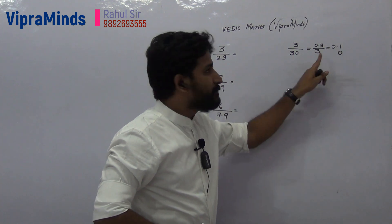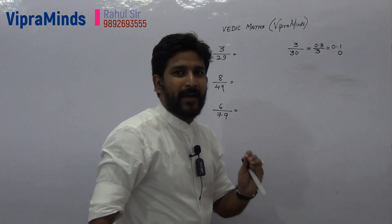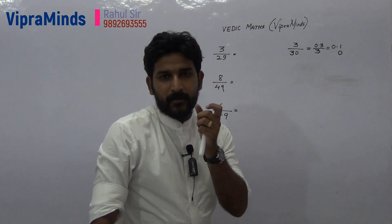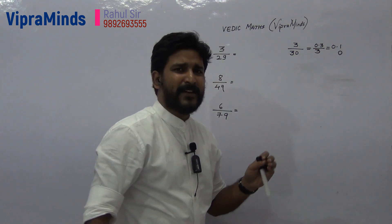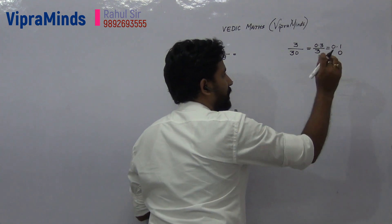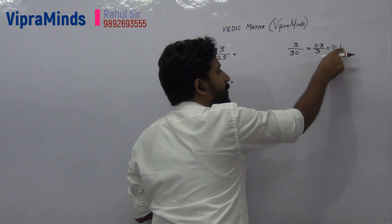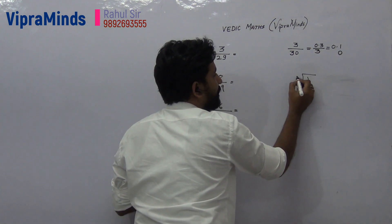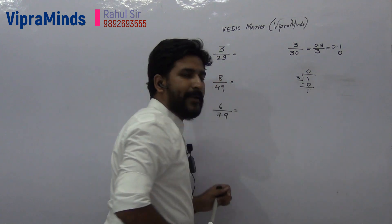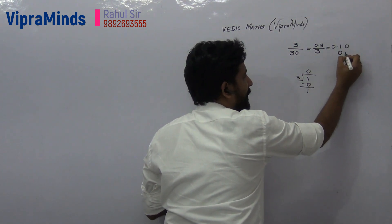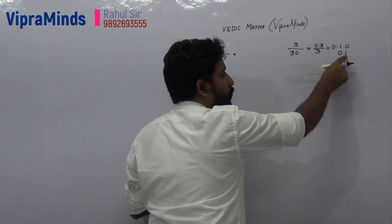Now again divide the next number by 3. You keep on dividing because all these numbers are non-terminating but recurring. If you want to find the answer up to 3, 4, or 5 decimal places, you just keep doing the same steps. The next number to divide by 3 is 01, which is just 1. 1 divided by 3: 1 does not go in 3's table, so quotient is 0, remainder is 1.